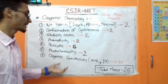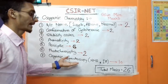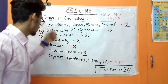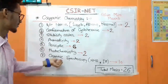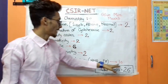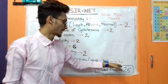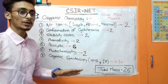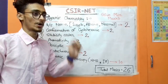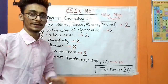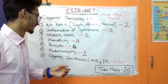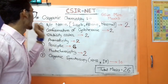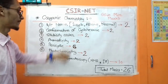In organic chemistry, organic spectroscopy gives the maximum marks. Similarly in inorganic chemistry, inorganic spectroscopy gives maximum marks. So you should have a clear concept of spectroscopy — both organic and inorganic. Now let's move on to physical chemistry.